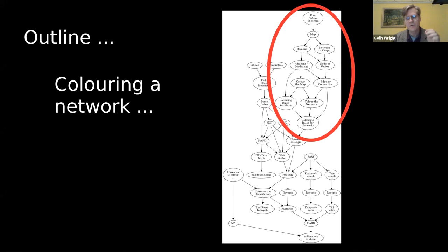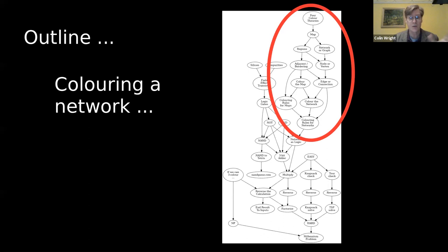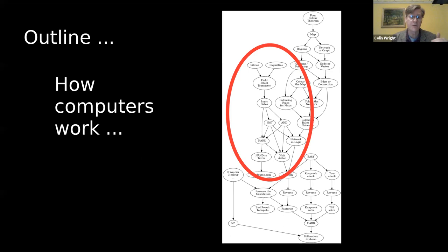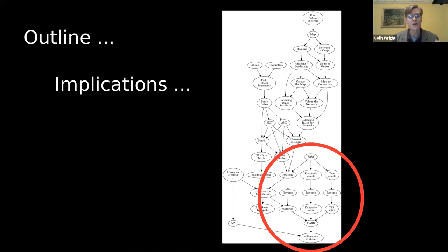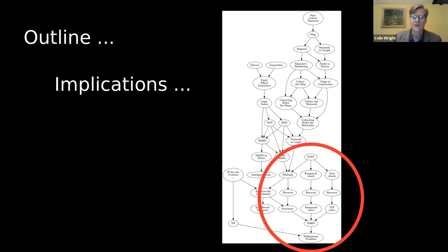I'm going to start by talking about coloring a network. Some of you are familiar with the four color theorem, and that's actually where I'm going to start. I'm also going to talk about computers and how computers work at a very, very low level. And then I'm going to pull these together — the title of the talk is 'Colors Can Compute.' I want to talk about colorings, talk about computation, marry those two, and tidy up by saying why this isn't just a game, why this is actually critically important.